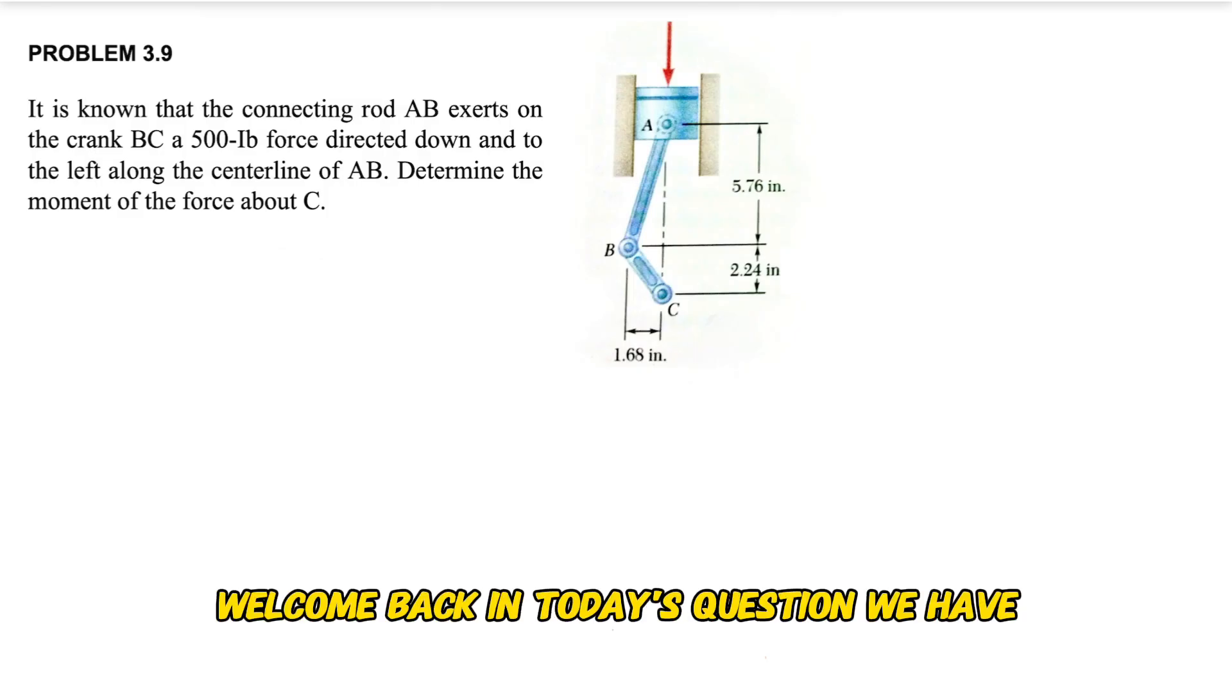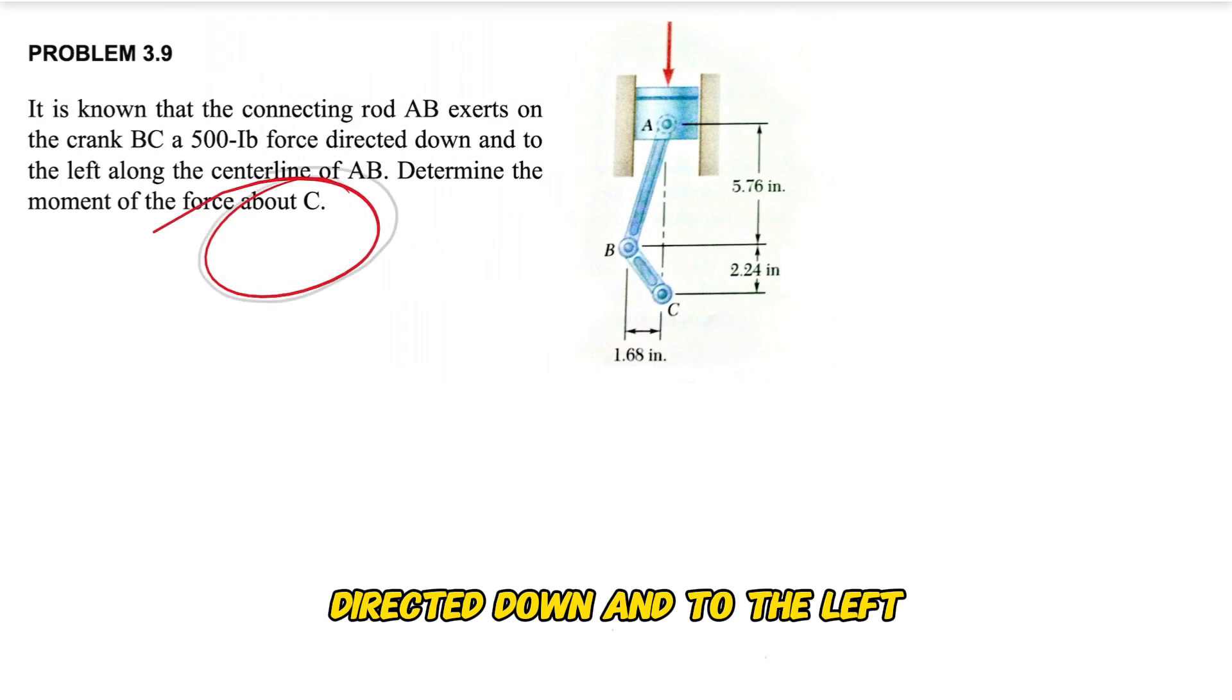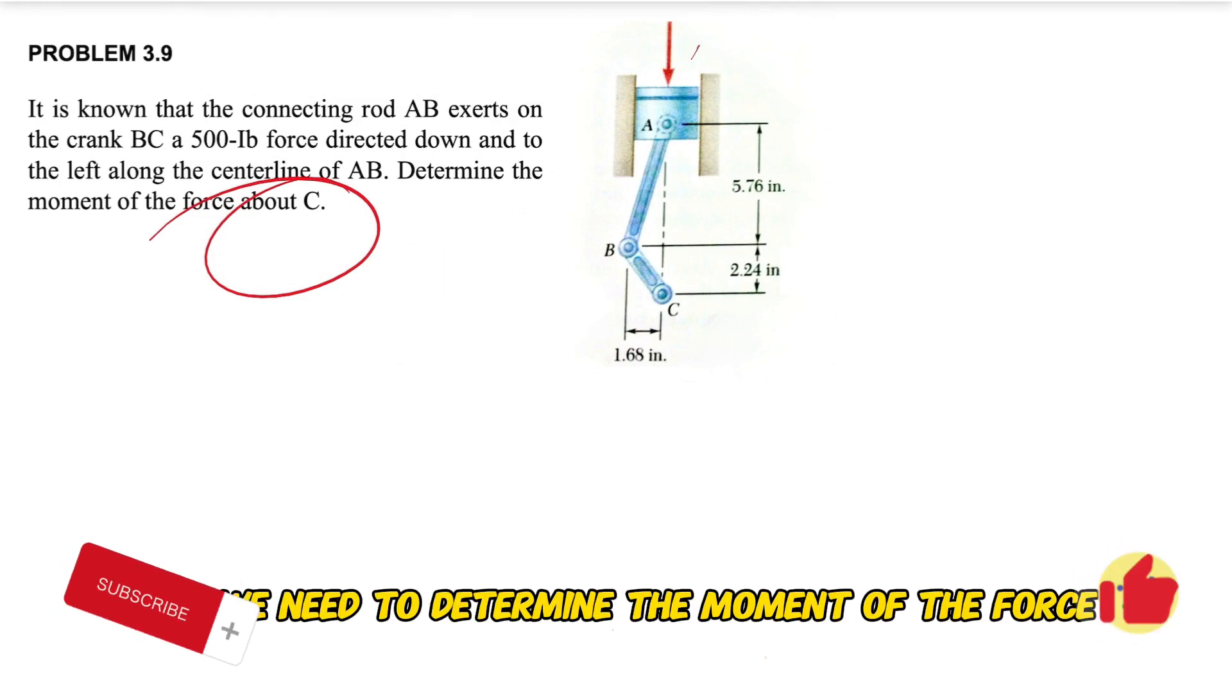Hi everyone, welcome back. In this question we have the connecting rod AB that exerts on the crank BC a 500-lb force directed down and to the left along the centerline of AB, and we need to determine the moment of the force about point C.